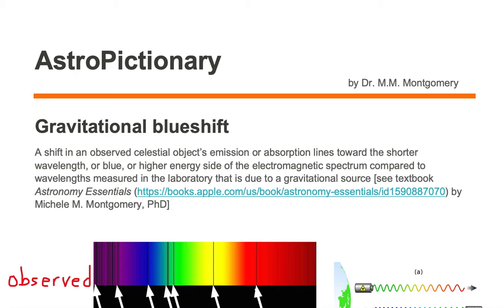Gravitational blueshift is a shift in an observed celestial object's emission or absorption lines towards the shorter wavelength, or blue, or higher energy side of the electromagnetic spectrum compared to wavelengths measured in the laboratory that is due to a gravitational source.